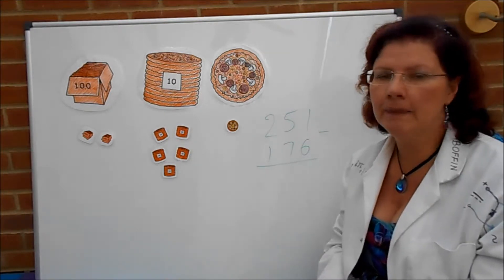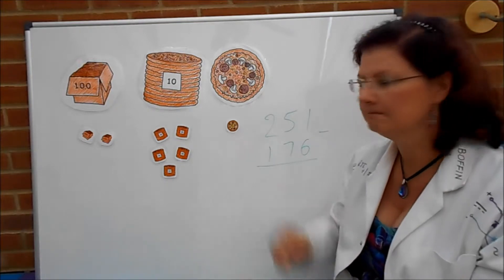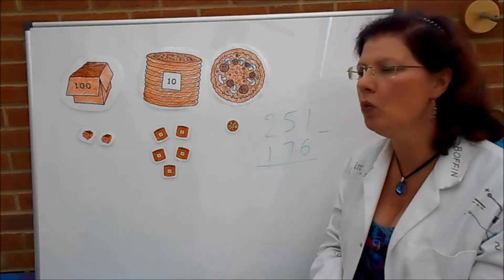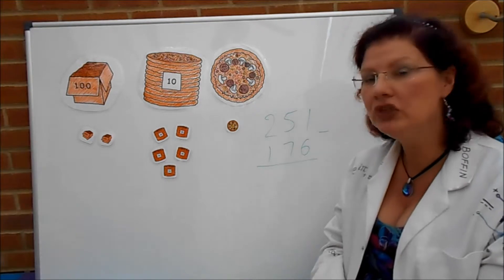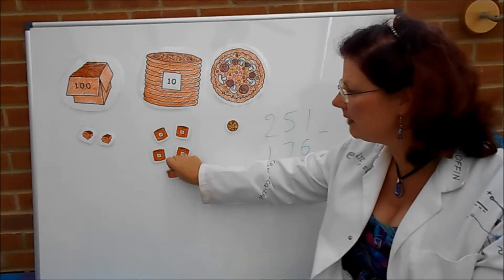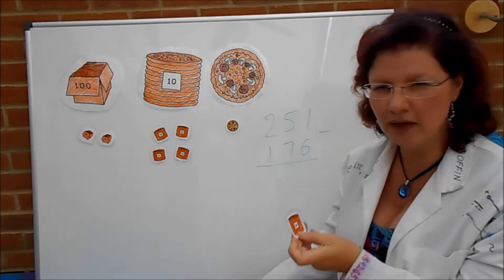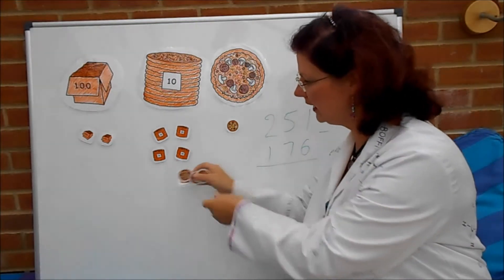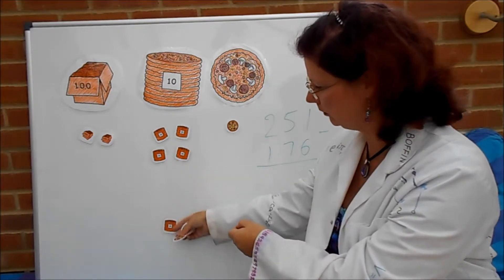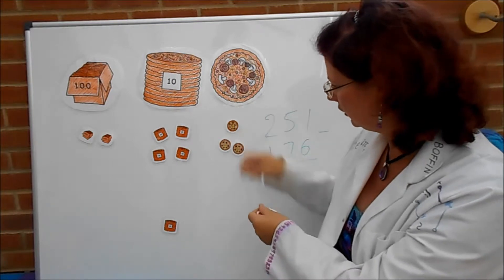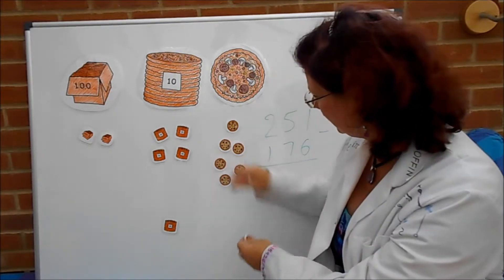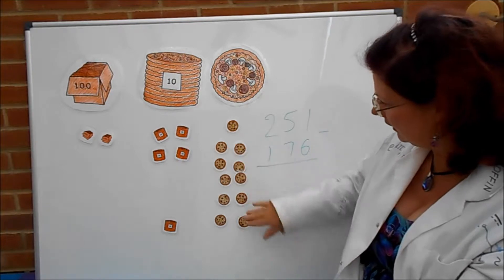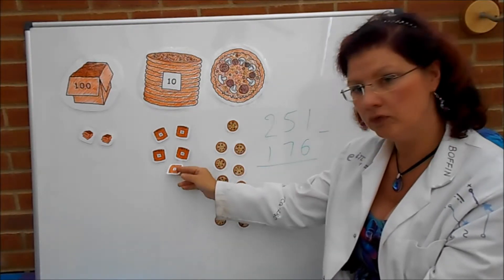So starting off in the units here, your customer wants six pizzas. Problem, you've only got one. If you'd had eight pizzas there you could have given him six but you haven't, you've only got one. What are you going to do? Well, fortunately you've got some on the shelves at the back. So you take one of these packs of 10 here and you unpack it. Shove them in the oven quickly and they cook through. So we're taking one pack of 10 and we're going to swap it for 10 ones. So I'm taking away one of those, pop it down here, and we're going to swap it for 10 ones. One, two, three, four, five, six, seven, eight, nine, ten.